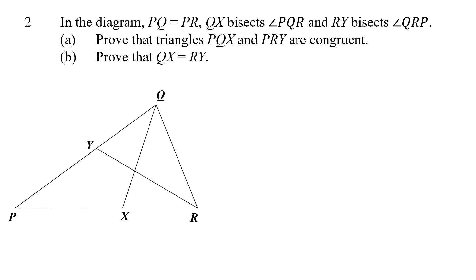Let's look at the next question. This is also an O-level question. In the diagram, we are given that PQ is equal to PR. QX bisects angle PQR and RY bisects angle QRP. We are asked to prove that triangles PQX and PRY are congruent. I've already shown you triangle PQX and triangle PRY — we have to prove the two triangles are congruent.